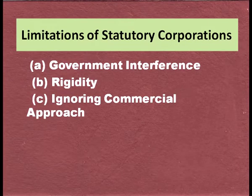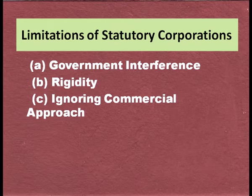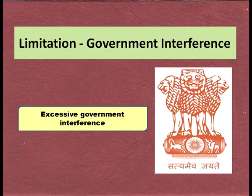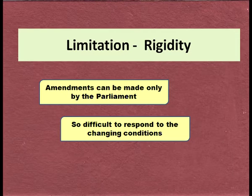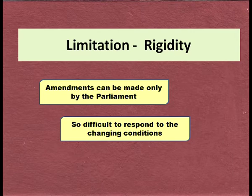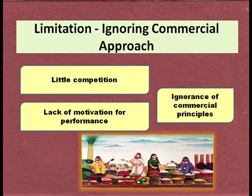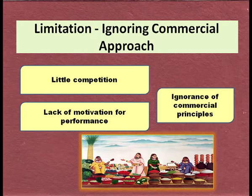Limitations of statutory corporation: excessive government interference is present. The structure is more rigid — once a decision is taken, it is difficult to change. Amendments can only be made by Parliament, making it difficult to respond to changing conditions. There is little competition, lack of motivation for performance, and commercial principles are largely ignored in most statutory corporations.